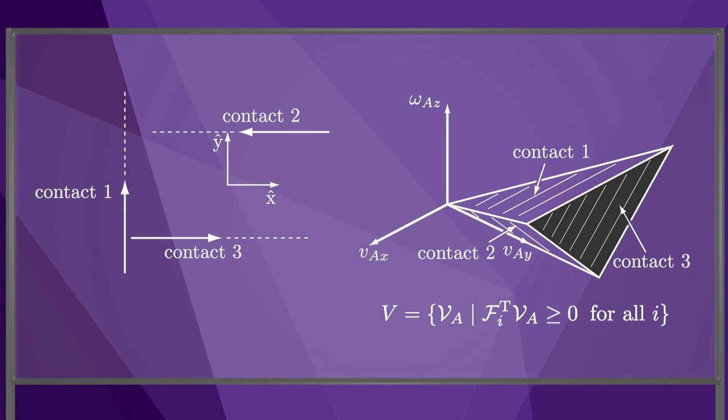This image shows an example of a polyhedral convex cone for three stationary fixtures acting on a planar body. Each contact defines a wrench and therefore a constraint plane in the three-dimensional twist space. Those planes form the faces of the cone.